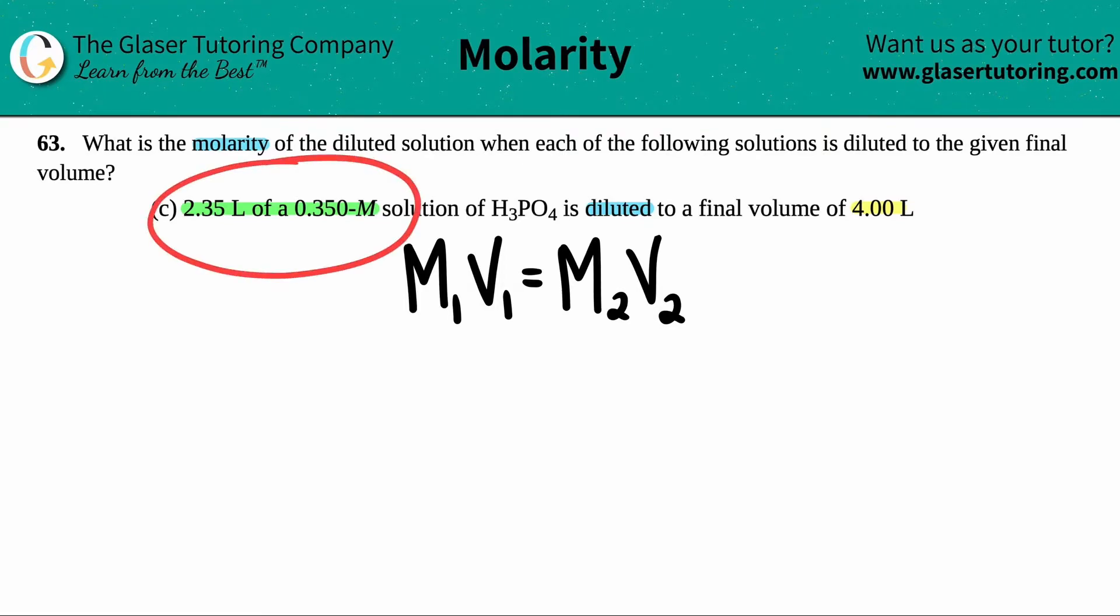Look at this one, guys. The clear takeaway or the clear giveaway is if they tell you that you have a volume, and in this case it's liters, of a molarity. So anytime that you see a volume value of A is like the keywords, molarity, that means that these go together.